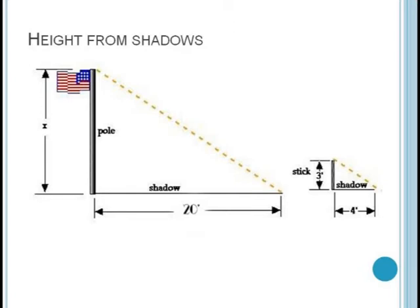So now all we have to do is measure the shadow of the flagpole, which in this case we see is 20 feet long. Setting up our proportion, x divided by 3 is equal to 20 divided by 4. So x divided by 3 equals 5, and x, the height of our flagpole must be 15 feet tall.